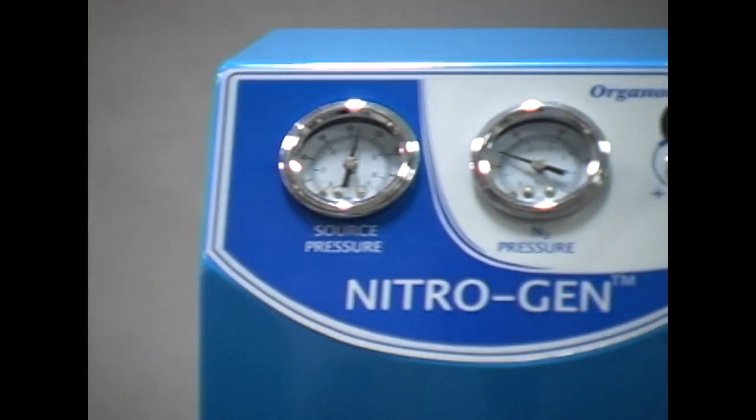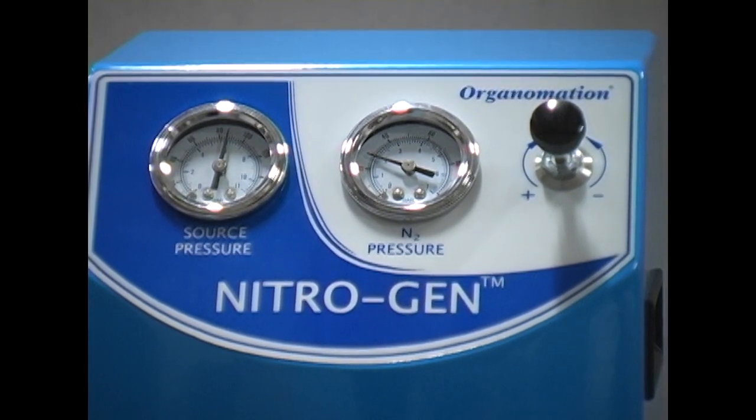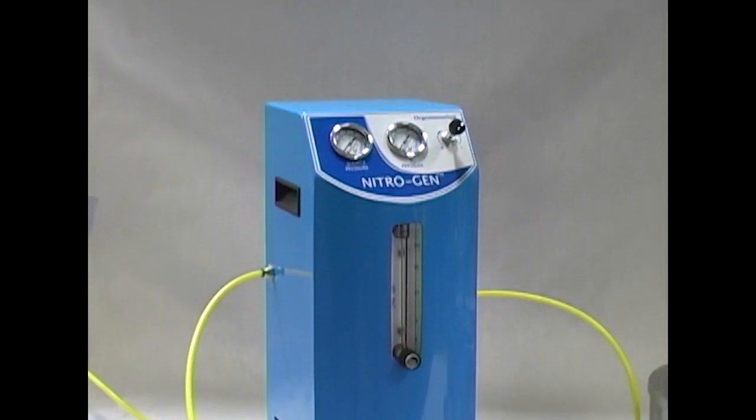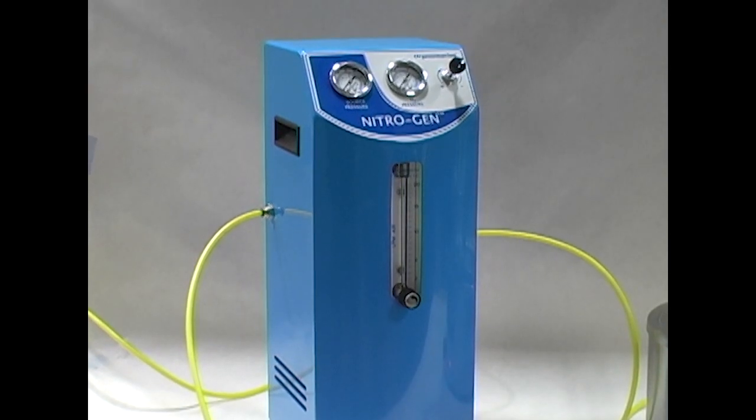Designed for various lab applications such as LC-MS and blanketing, the unit can produce up to a 99% pure stream of nitrogen at up to 20 liters per minute.